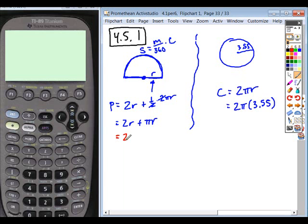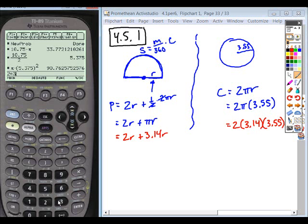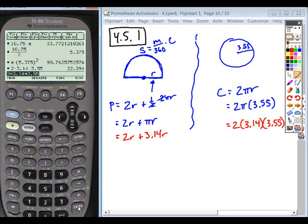Okay, now this particular problem asks you to use 3.14 for pi. Okay, so in this case, we can take 2R plus 3.14R. And over here, we get 2 times 3.14 times 3.55. Okay, so if we calculate this,